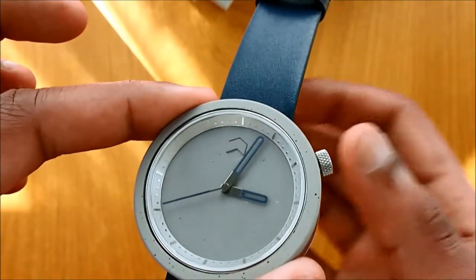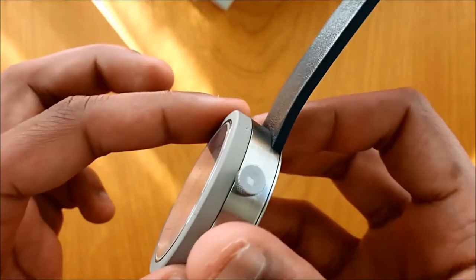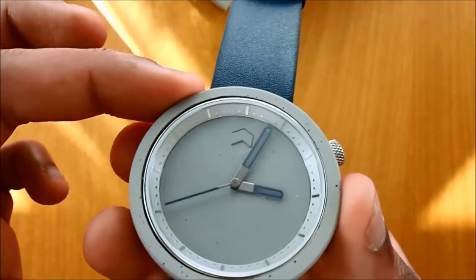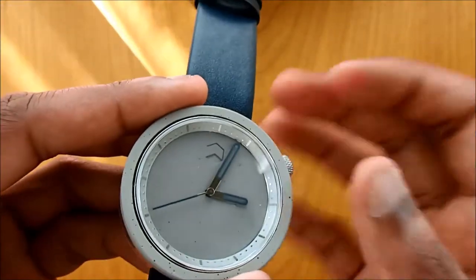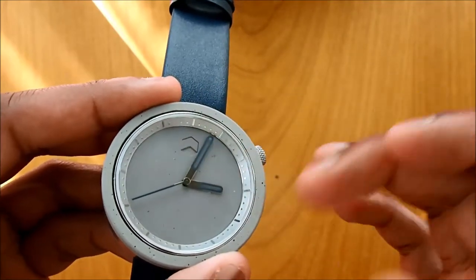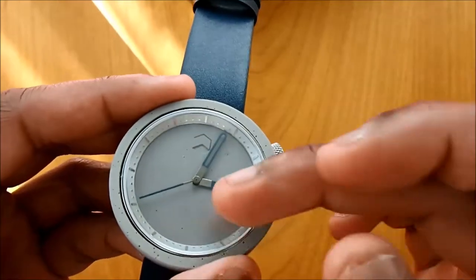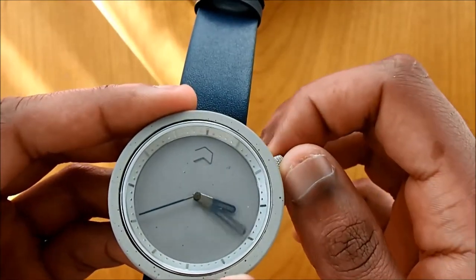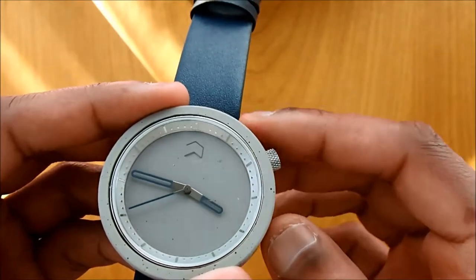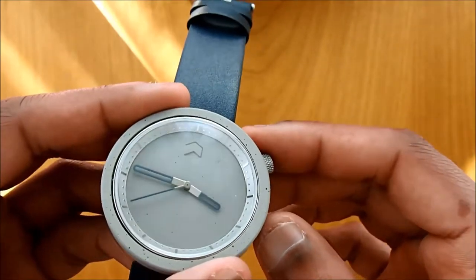There you go. And you have your index which is very minimalistic with bars and dots, and then you have your blue hands as well. And here you have your Aggregate Watch logo.